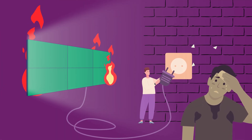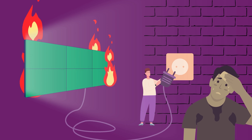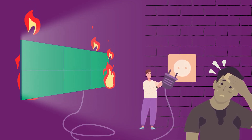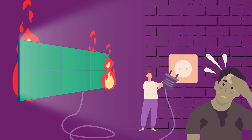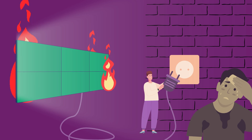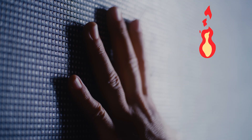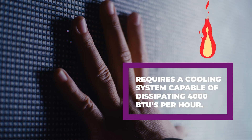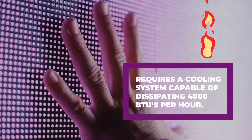Heat, or BTUs. The heat generated by an LED wall depends on its power consumption and the environment where it's installed. The BTU rating measures the amount of heat generated by the display, and it's essential to consider it to ensure the screen doesn't overheat. For instance, an LED wall with a BTU rating of 4,000 requires a cooling system capable of dissipating at least 4,000 BTUs per hour — that's a third of a ton of additional air conditioning for the space.